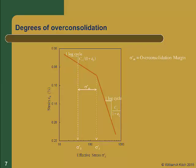There are two ways we can describe the degree of over consolidation. The first is the over consolidation margin sigma prime m, which is simply the difference between the pre-consolidation stress sigma prime c and the current vertical effective stress sigma prime zero. Another way is the over consolidation ratio, which is sigma prime c divided by sigma prime zero. Both are used in practice. In general, sigma prime m is more convenient and a little more accurate, particularly for lightly over consolidated soils.